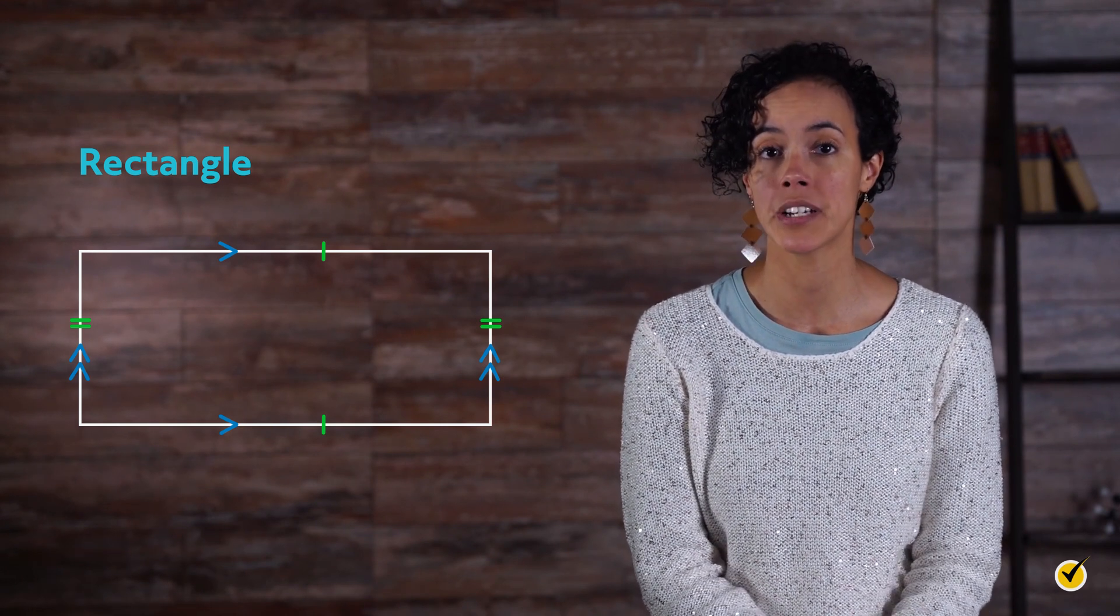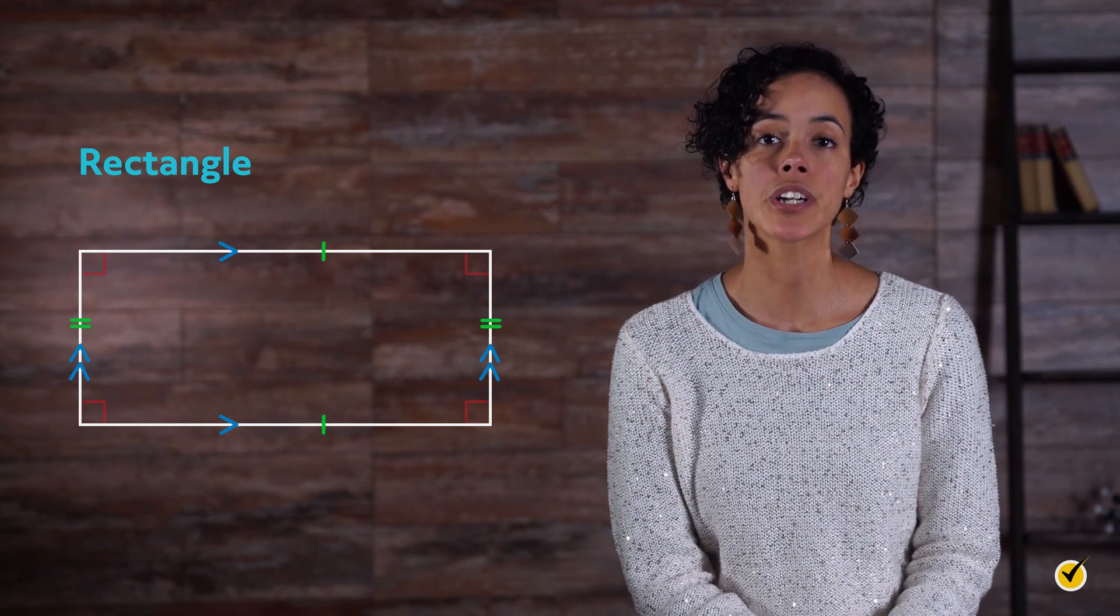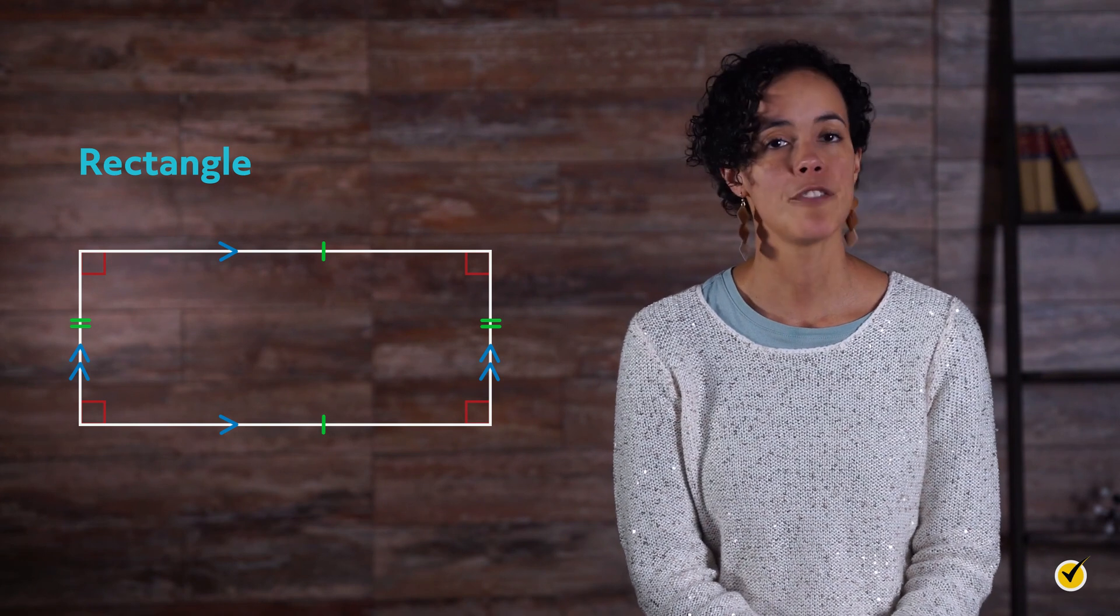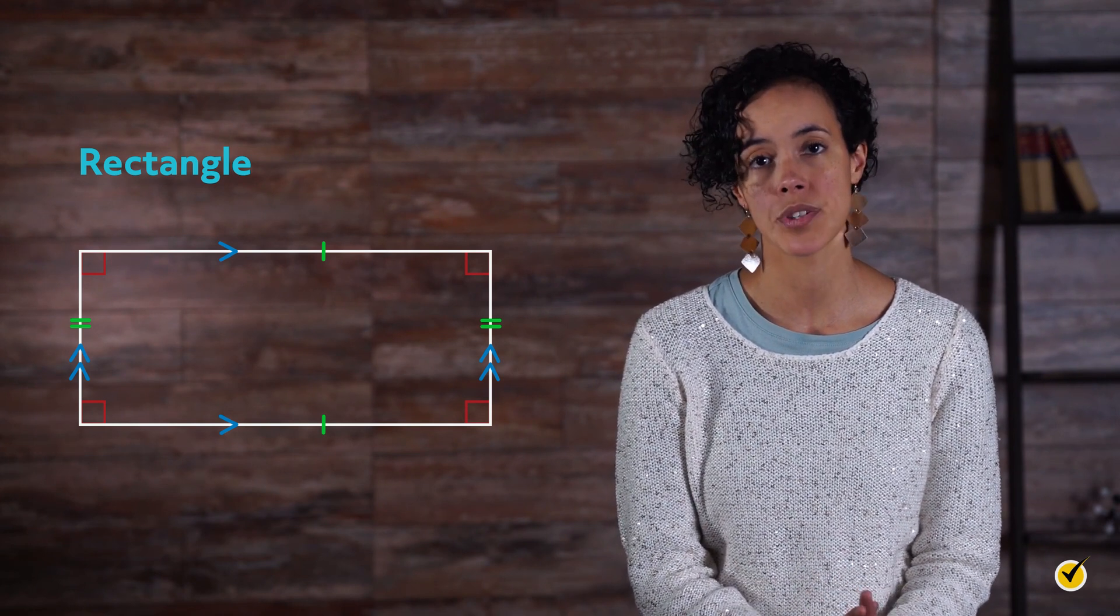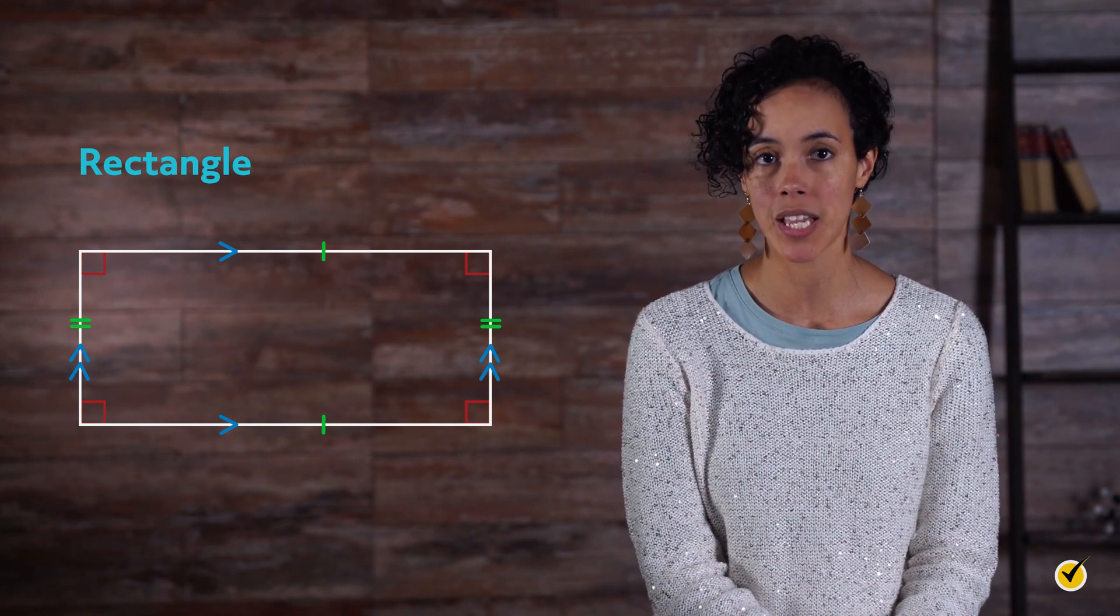What makes a rectangle a special parallelogram is that its interior angles are all the same. In fact, they are all right angles, which means they measure 90 degrees.